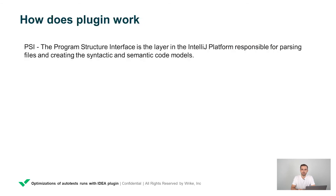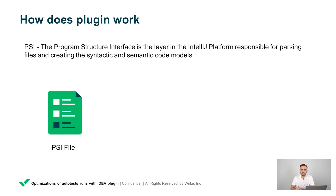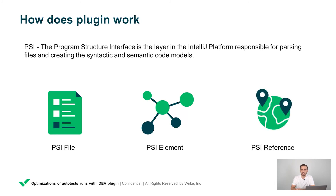Let's jump under the hood and see how this plugin works. IDEA plugins work with PSI — Program Structure Interface. It is a layer of the IntelliJ platform responsible for parsing files and creating syntactic and semantic code models. Three PSI entities are important in our case. PSI File is an object representation of a file with code. PSI Files consist of PSI Elements — representations of language elements — which could be a class, a method, or even the closing brace of a small block of code. And the last entity is PSI Reference, which allows us to get usages of a particular PSI element.